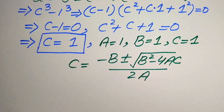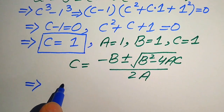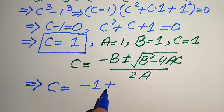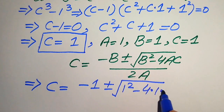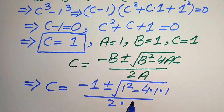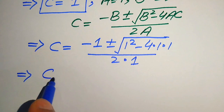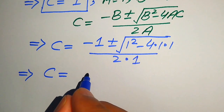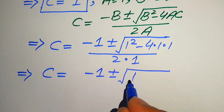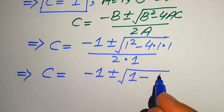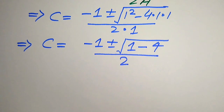After substituting the values, it will be written as c equals minus 1 plus or minus square root of 1 squared minus 4 times 1 times 1, divided by 2 times 1. This simplifies to c equals minus 1 plus or minus square root of 1 minus 4, divided by 2, which gives us minus 1 plus or minus square root of minus 3, divided by 2.